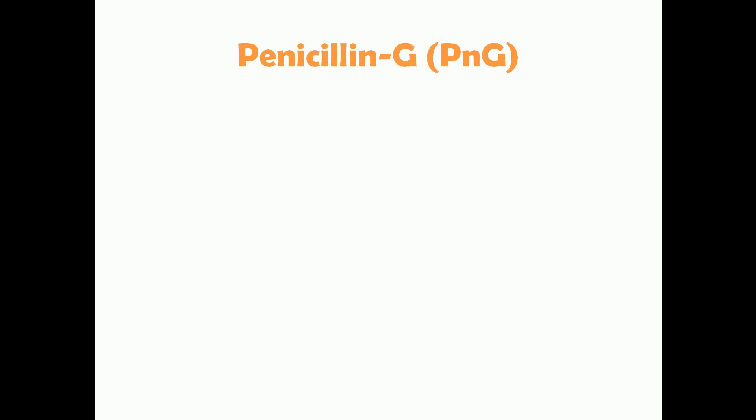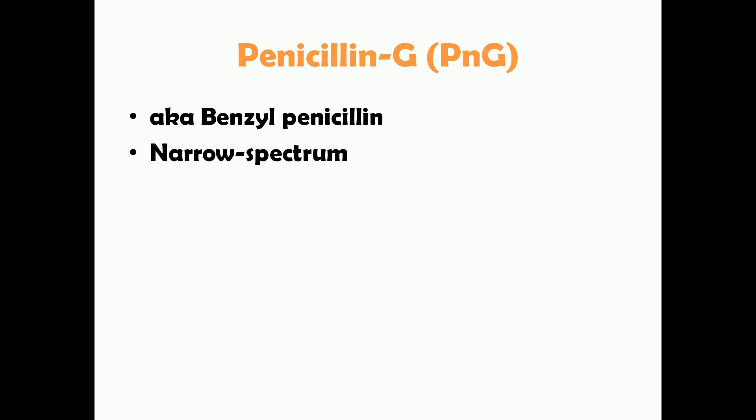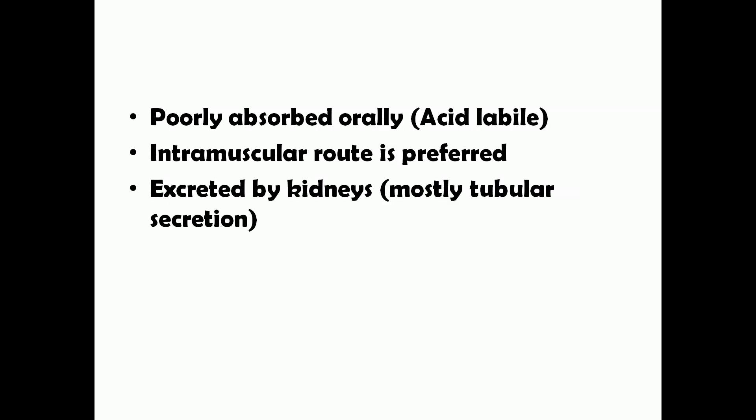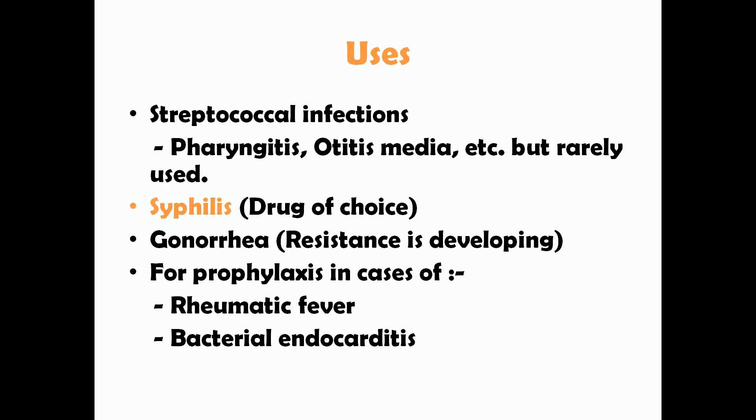Now we'll see about penicillin G, also known as PNG or benzyl penicillin. This is a narrow-spectrum antibiotic, active against only a small group of bacteria, mainly gram-positive bacteria. It's poorly absorbed orally due to being acid labile, so the intramuscular route is preferred. It's excreted by the kidneys — primarily by tubular secretion, with glomerular filtration also involved to some extent.